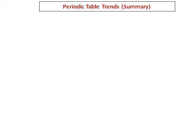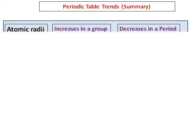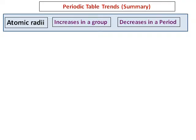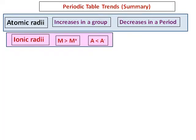We have learned so much in periodic trends. Let's do a summary. The first trend is atomic radii. Atomic radii increases in a group and it decreases in a period.